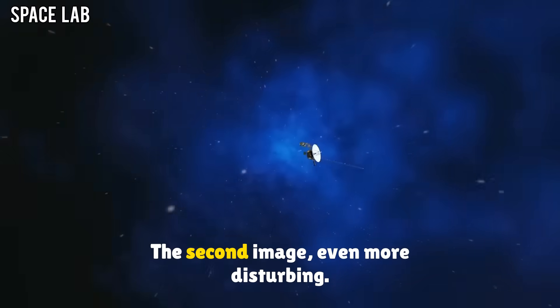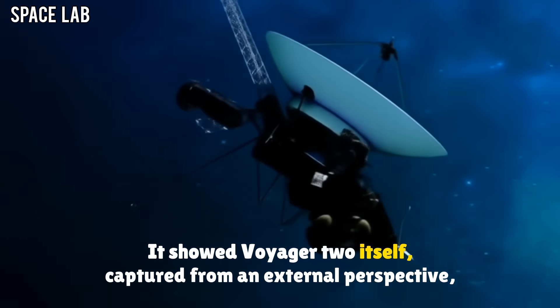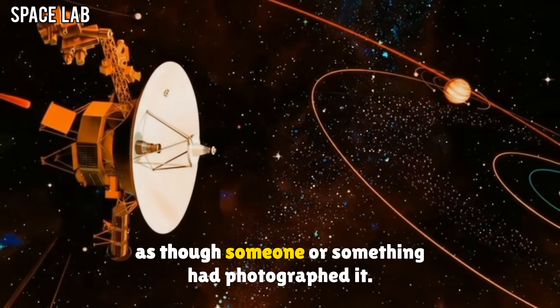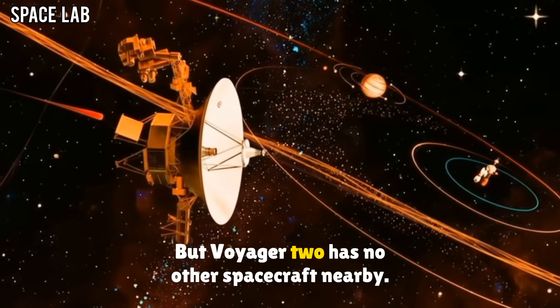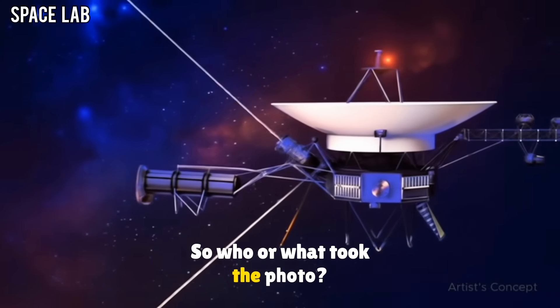The second image, even more disturbing. It showed Voyager 2 itself, captured from an external perspective, as though someone or something had photographed it. But Voyager 2 has no other spacecraft nearby. So who, or what, took the photo?